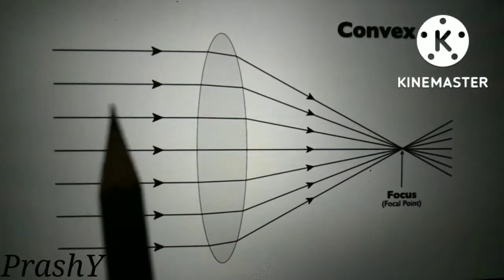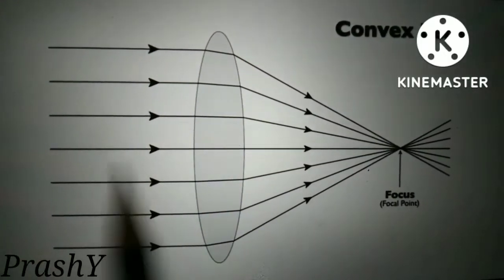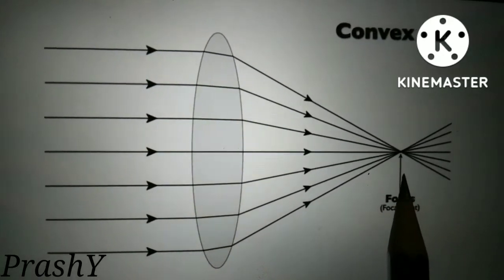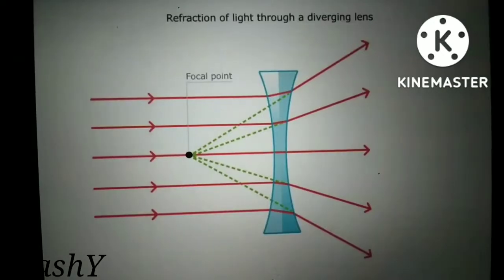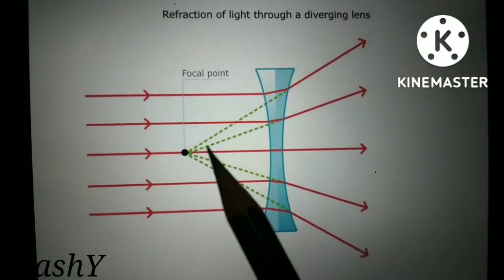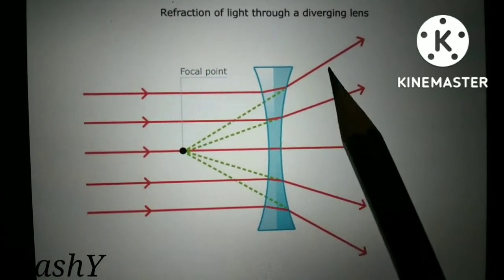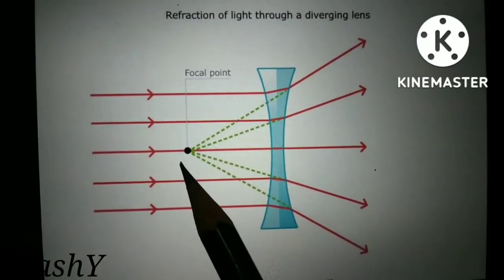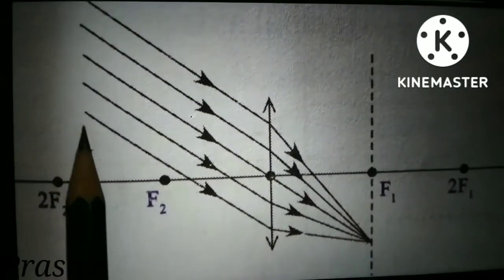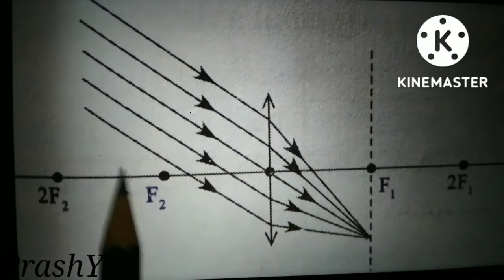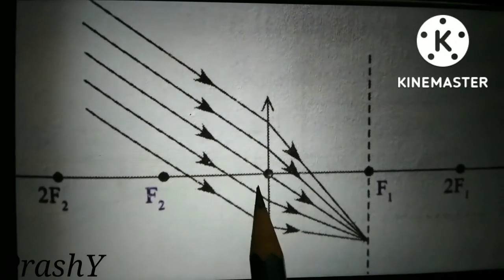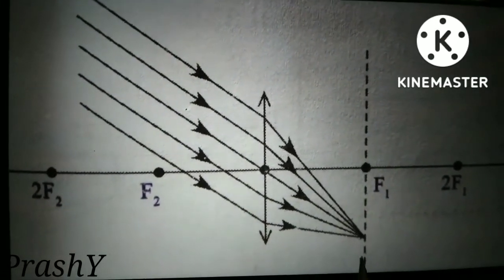We know that when a parallel beam of light is incident on a convex lens, they converge at a point on the principal axis. Similarly for a concave lens, they appear to diverge from a point on the principal axis. This point we call the focus. When the parallel beam of light is incident on a lens making some angle with the principal axis, they meet on the focal plane.